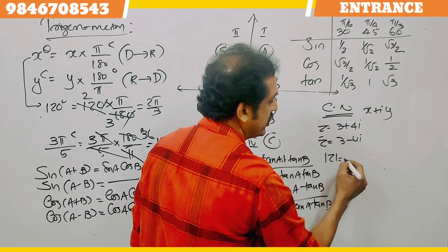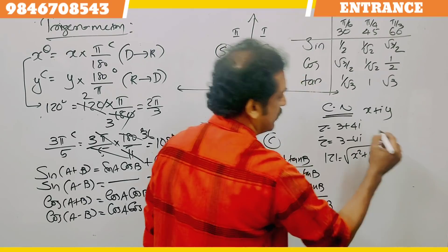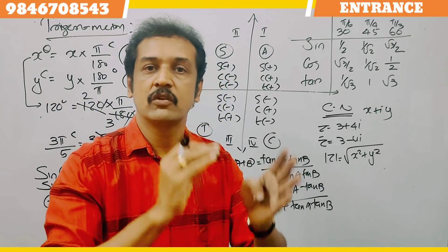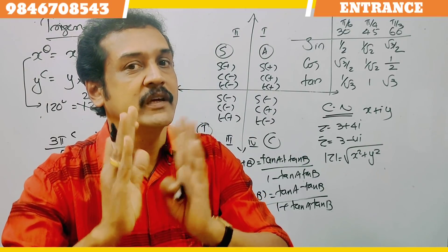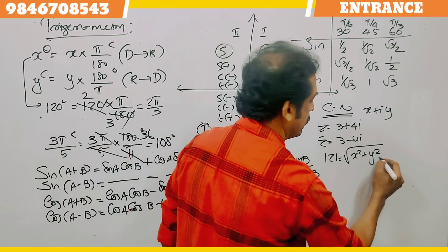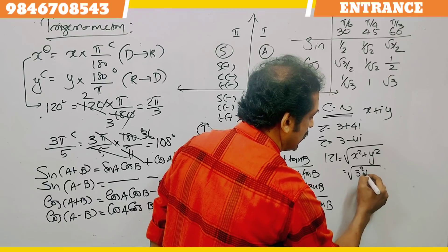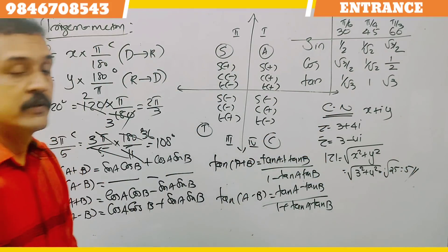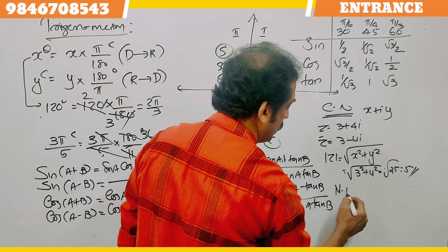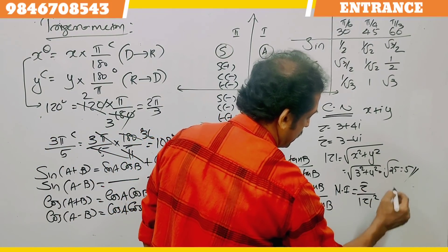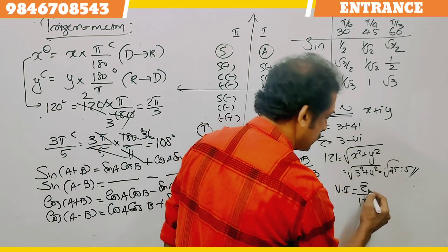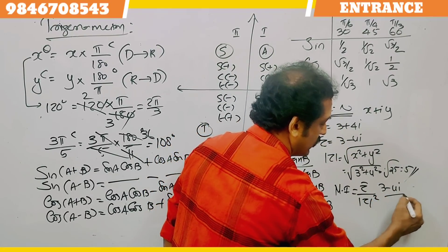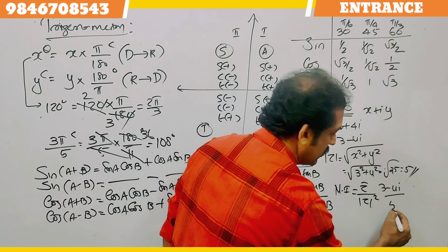Modulus formula: |z| = √(x² + y²), which is the square root of the real part squared plus the imaginary part squared. For z = 3 + 4i, |z| = √(9 + 16) = √25 = 5. The multiplicative inverse is z̄/|z|², so it is (3 − 4i)/25.